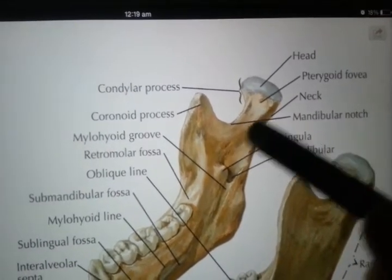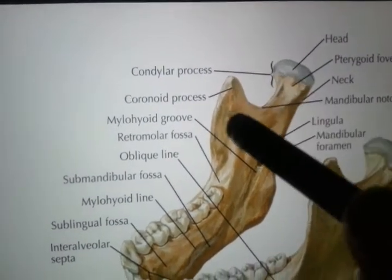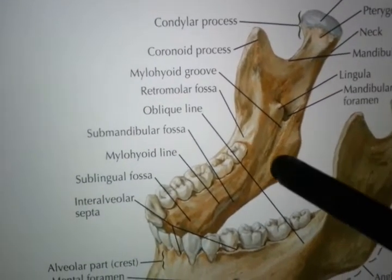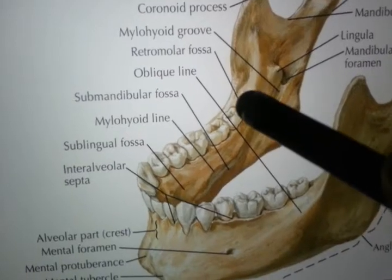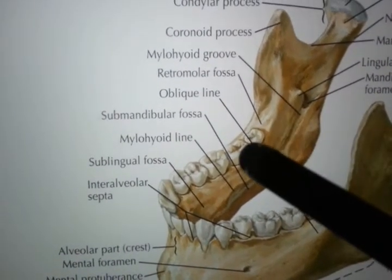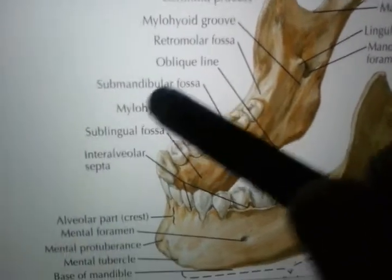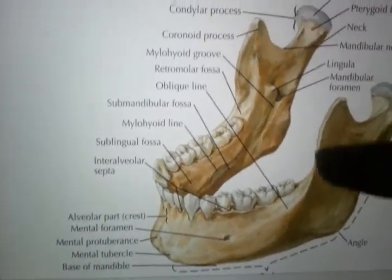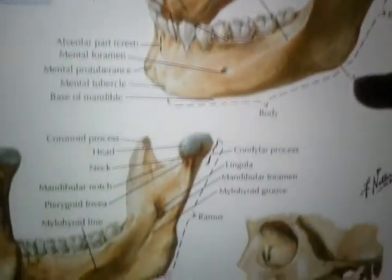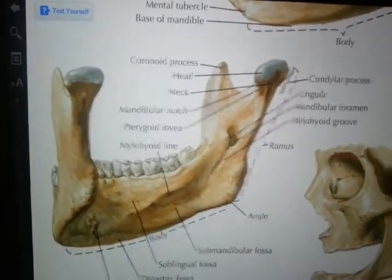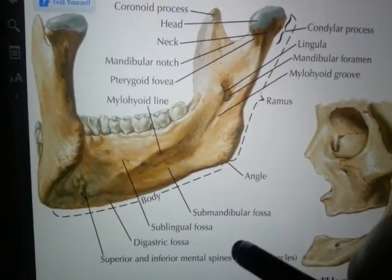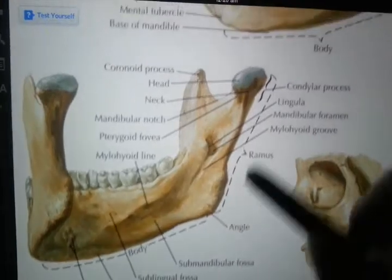You may see the ramus; we discussed the lingual part, the mandibular notch, head, pterygoid fovea, neck, condylar process taking part in the mandibular joint, mylohyoid groove, retromolar area, and the oblique line. You may pause the video for better viewing. This is the posterior lateral aspect — you may pause it anytime you wish.